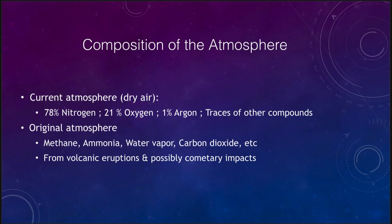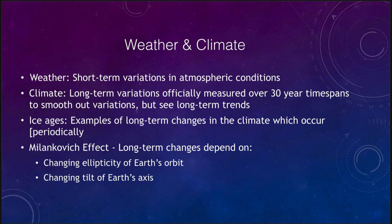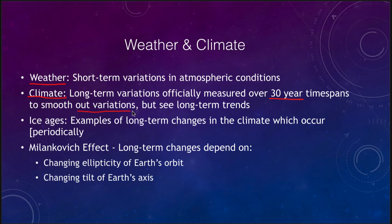Finally, let's look at weather and climate. Weather is the short-term variations in atmospheric conditions — how things change from day to day, week to week, and so on. Climate, on the other hand, is long-term variations, and officially we measure this over a 30-year time span. The idea of 30 years smooths out variations on shorter timescales, but we can still see long-term trends that occur over longer timescales.